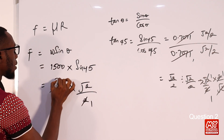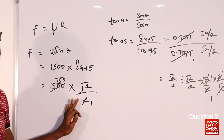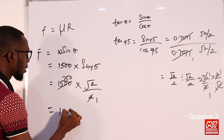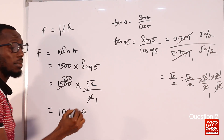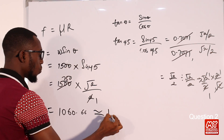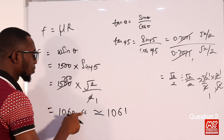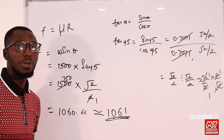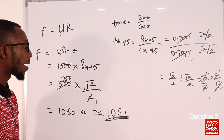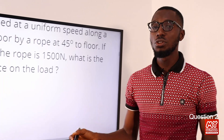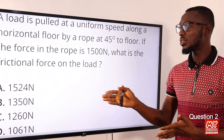So 1500 times sine 45 gives 1500 times 0.7071, which is approximately 1060.66. Looking through the options, option D is the correct option for the frictional force.